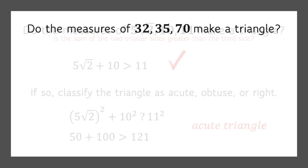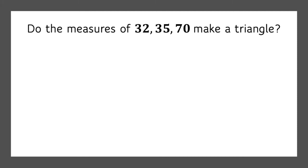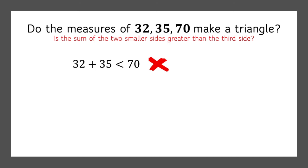Okay, one more. 32, 35, and 70. So first, we'll take the two smaller sides, make sure they're greater than 70, so 32 plus 35. Nope, that's less than 70, so we can't do anything else with that one.